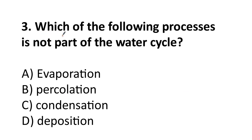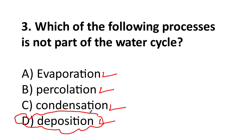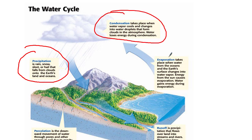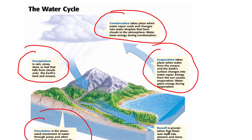Question 3: Which of the following processes is not part of the water cycle? The options are evaporation, percolation, condensation, deposition. The answer will be deposition. The parts of the water cycle are: precipitation, condensation, evaporation, percolation, and runoff. There is no deposition. Remember, there are five parts of the water cycle.